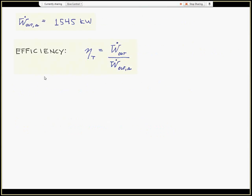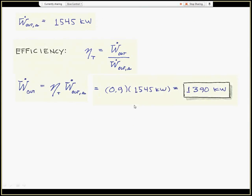Next, I use the isentropic efficiency of the turbine, which is the actual power out of the turbine divided by that isentropic power, which I just calculated as 1545. And I find that the power out of the turbine is 1390 kW. Very good. So there's the power out of the turbine.